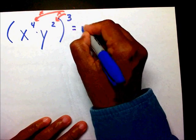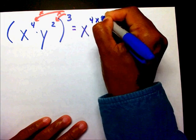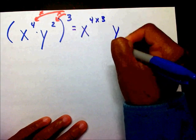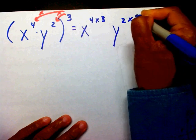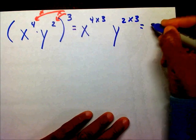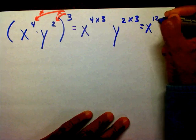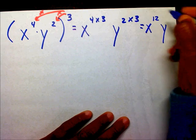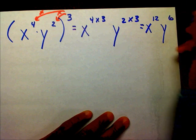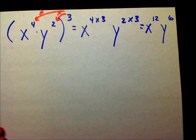So that's going to leave us with x to the 4 times 3, y to the 2 times 3, which equals x to the 12th, y to the 6th.